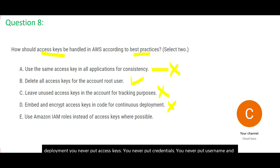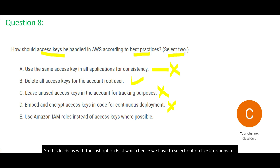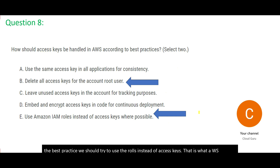This leaves us with option E. We have to select two options, and E looks correct. What E says is to use IAM roles instead of access keys — yes, this is the best practice. We should try to use roles instead of access keys; that is what AWS recommends. So the two final answers are B and E.